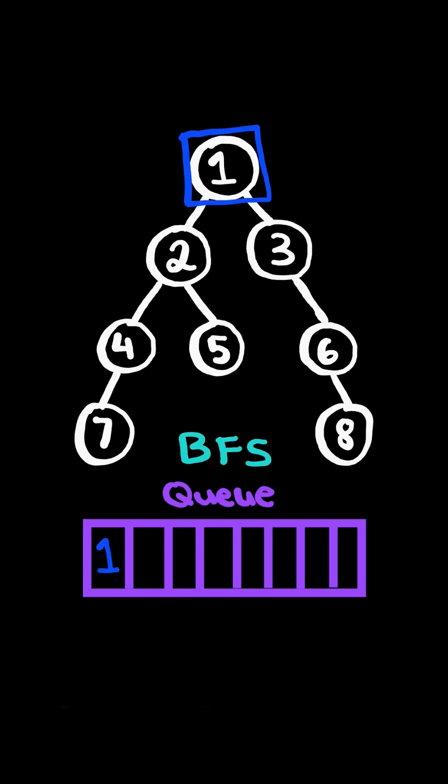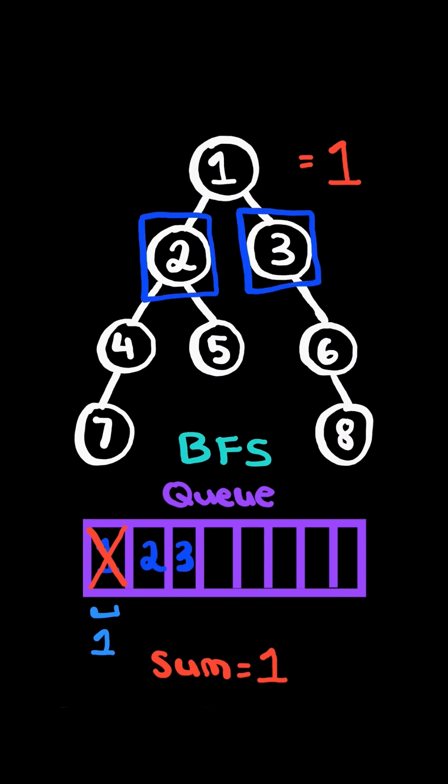We take the root node 1 and add it to our queue. Now we have one element in our queue. We pop the element and add it to a sum. This is the sum of the current level. When we pop an element, we add its children to the queue.